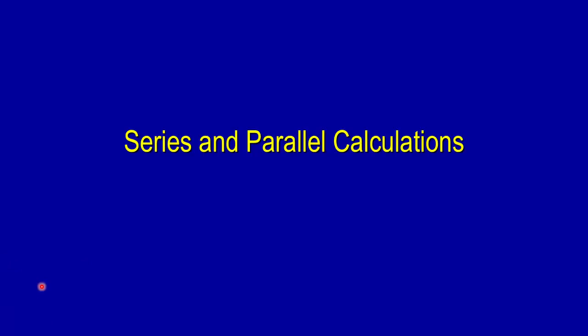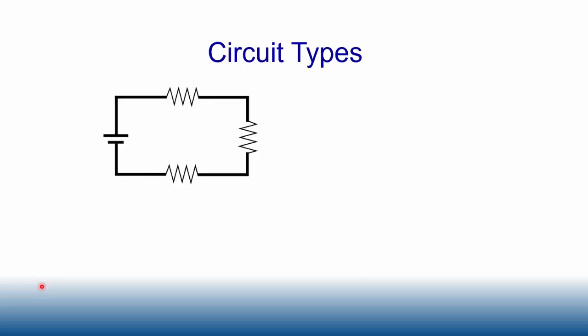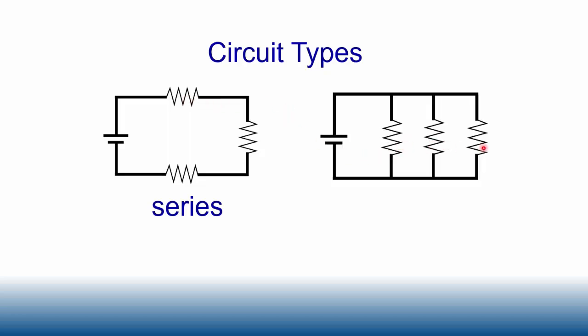We're going to take a look at series and parallel calculations to figure out what our total resistance is based on various circuit types. There are two basic types of circuits: a series circuit, where resistors are wired back to back, and a parallel circuit, where resistors are wired like a ladder.